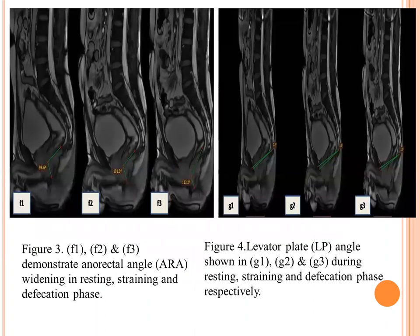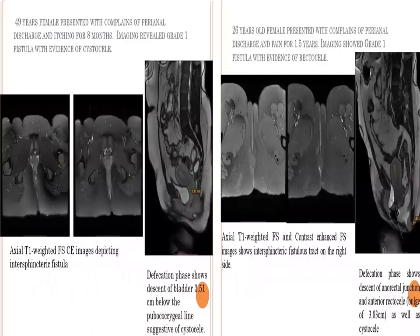Figure 3 shows images F1, F2, F3 demonstrating anorectal angle changes during resting and defecation phases. Figure 4 shows levator plate angle in images G1, G2, G3 during resting and defecation phases respectively. In another case, a 49-year-old female presented with perianal discharge and pain for 8 months; imaging revealed Grade 1 fistula with evidence of cystocele. A 26-year-old female presented with perianal discharge and pain for 1.5 years; imaging showed Grade 1 fistula with evidence of rectocele.